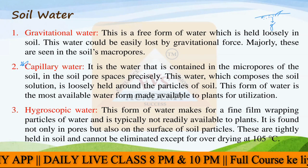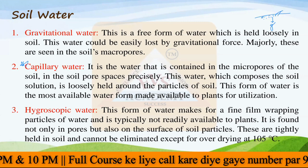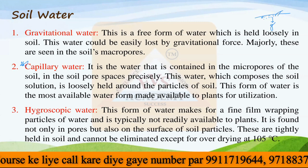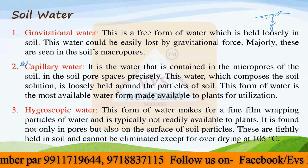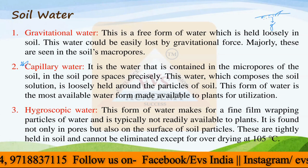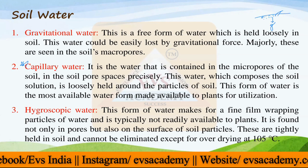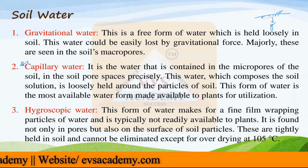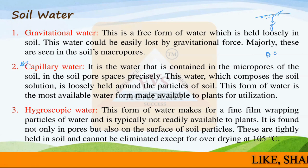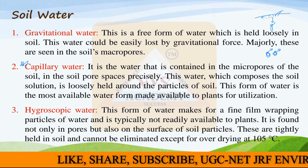Then we have hygroscopic water. This form of water makes a fine film wrapping the soil particles and is typically not readily available to plants. It is found not only in pores but also on the surface of soil particles. These are tightly held in the soil and cannot be eliminated except by oven drying at 105°C for more than 24 hours or at 120°C for 24 hours. The water is present just as a thin layer above the soil particles.